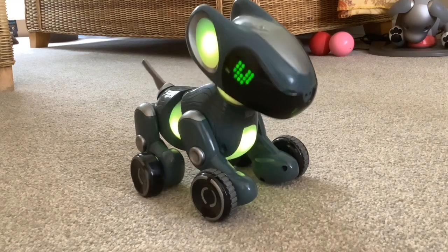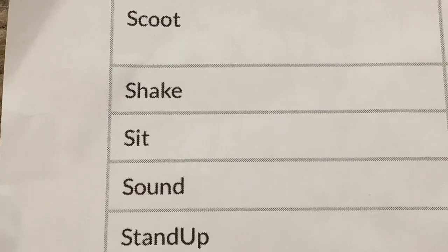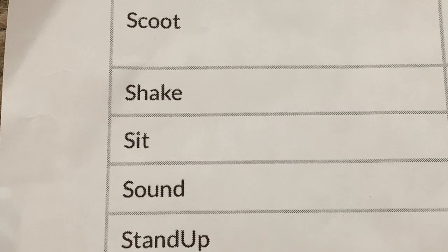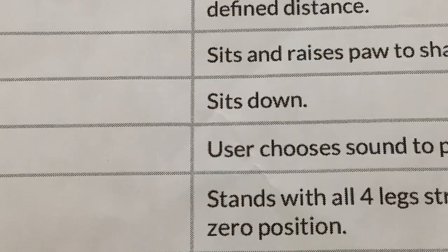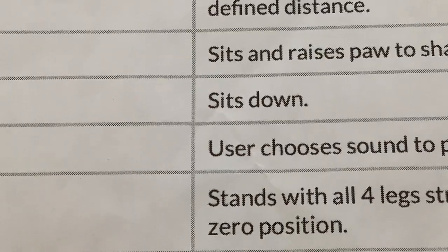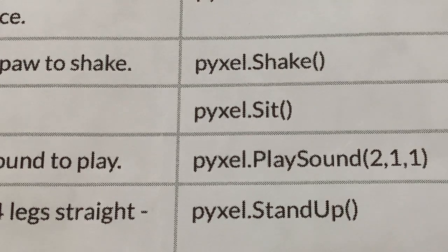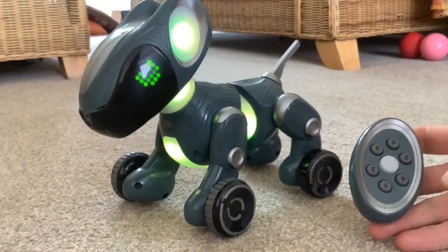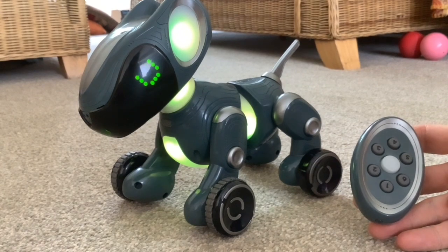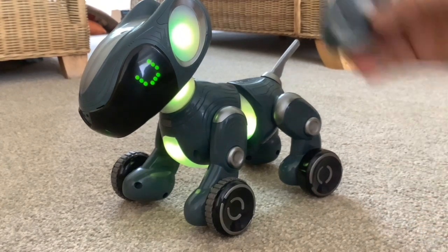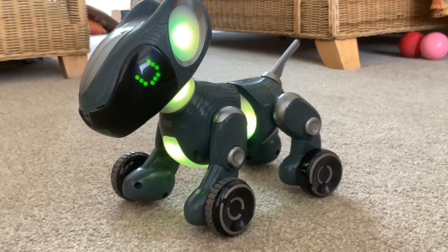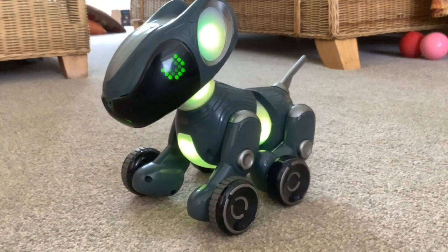The next one is sit — sits down. The Python code is pixel.sit with empty brackets. That's number six. Good boy — very nice.